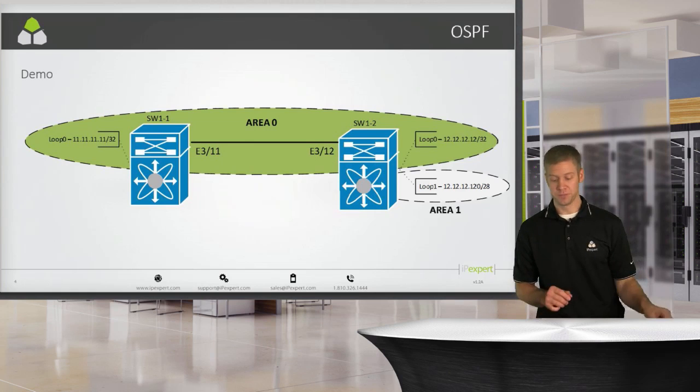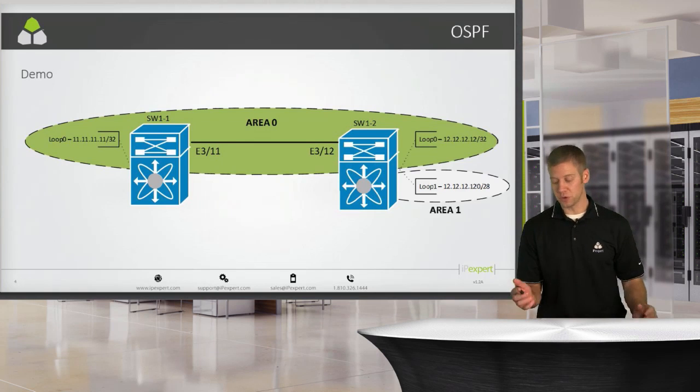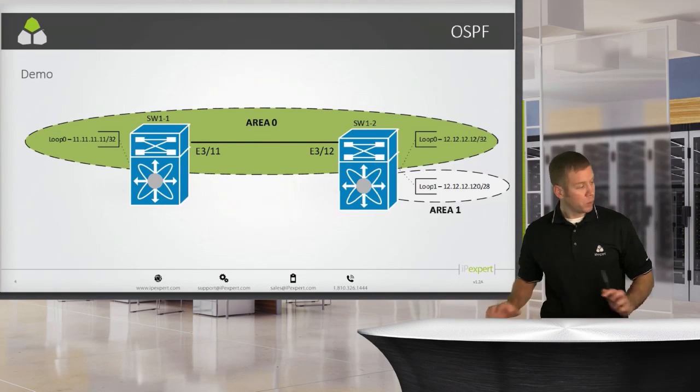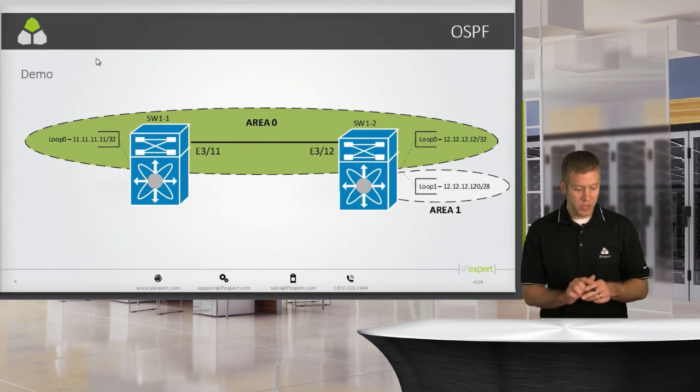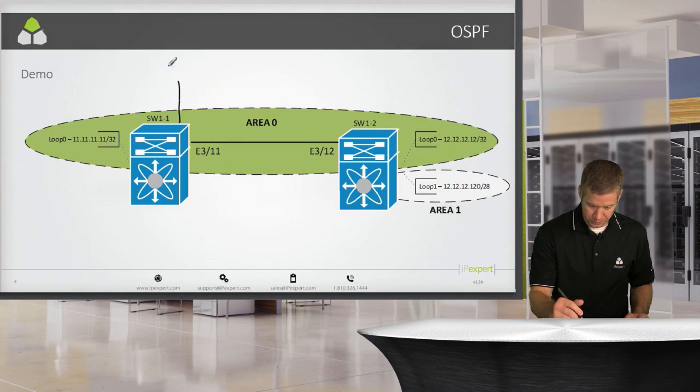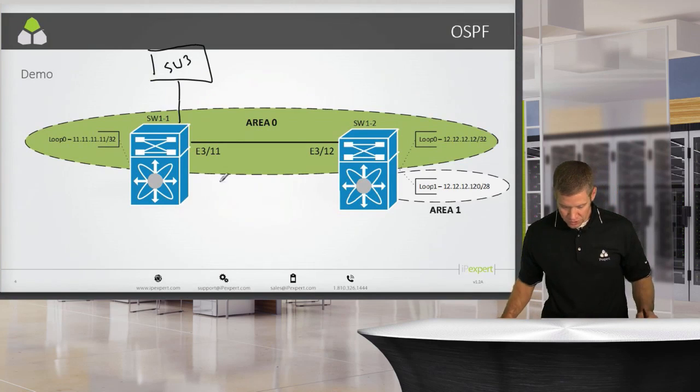I want to do a little video on route redistribution. Up to this point I have two different routing domains built out. I have an OSPF routing domain between switch one and switch two, and then I have an EIGRP routing domain between switch one and switch three. We had this all set up in terms of OSPF, and when we ran EIGRP we also set up another link between switch one and switch three.